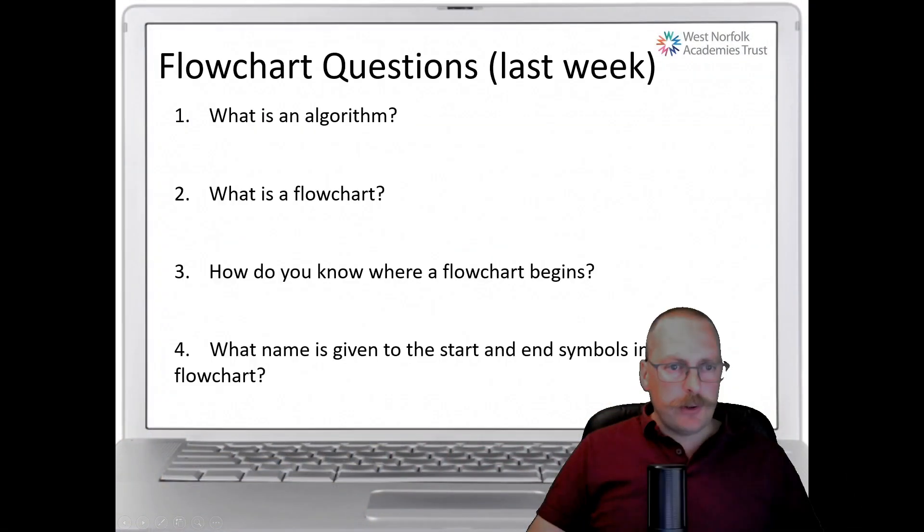So let's look at a recap from what we did last week. First of all, what is an algorithm? We know that's a step-by-step series of instructions to solve the problem. What is a flowchart? A flowchart is a visual way to represent the procedure of an algorithm step-by-step that occur during that. And how do we know where a flowchart begins? This is the oval shape we get at the start and it often says something like start or begin in there.